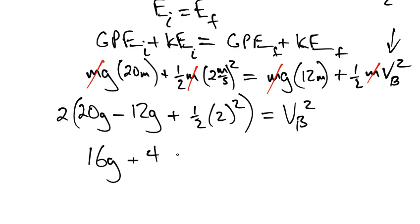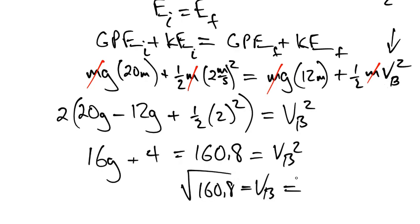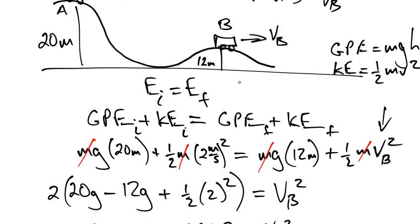So that's equal to V_B squared. Therefore, the square root of 160.8 is V_B, which is 12.6. Well, actually, 12.7, to be precise. There you go. And so that's our final answer. 12.7 meters per second at that location right there.